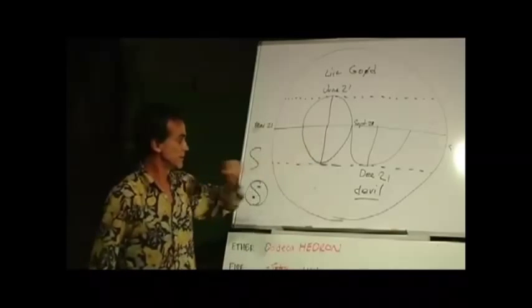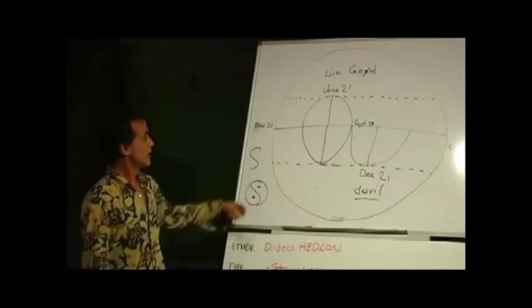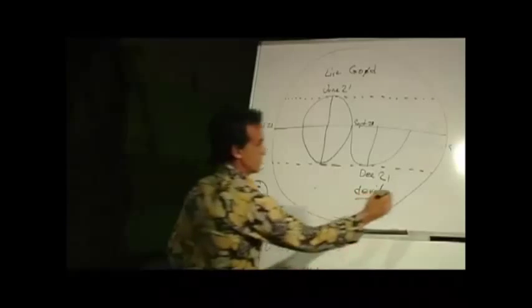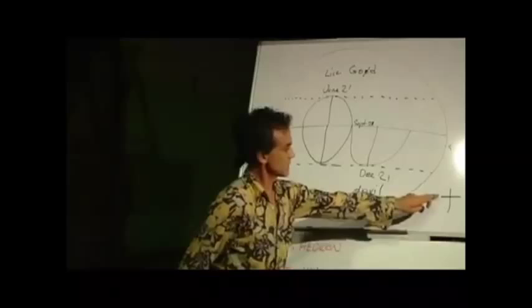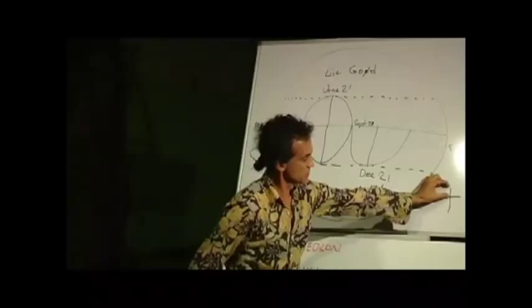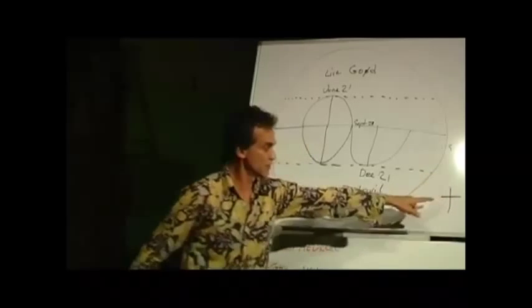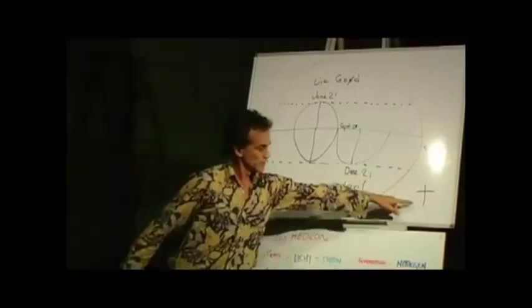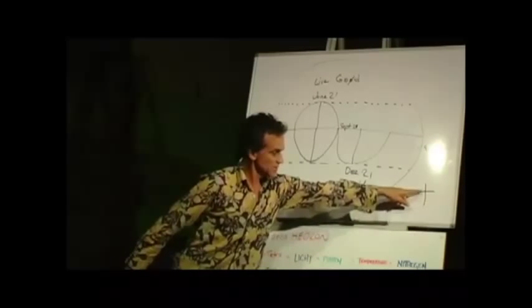Every cross comes from here. Even the most common cross that we have. That one. That's the equinoxes. This is the summer solstice because it casts a short shadow. And that's the winter solstice because it casts a long shadow.